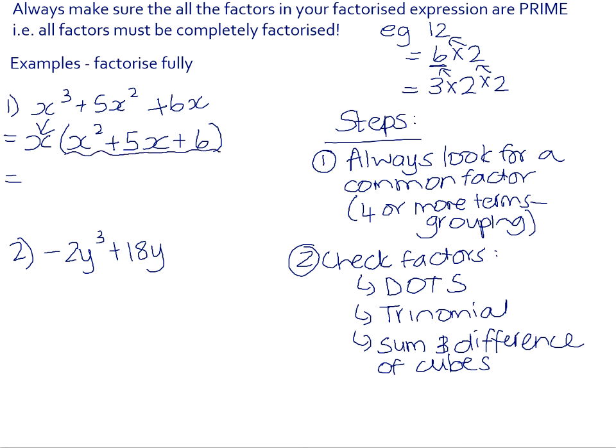But this factor here is a quadratic trinomial. So we would be able to factorise that into the product of two binomials. So x and x. And then the factors of positive 6 that add up to positive 5 are positive 3 and positive 2. Now that factor, x plus 3, is fully factorised. There's no further factorising to do there. And the same with x plus 2. So we are in fact finished.